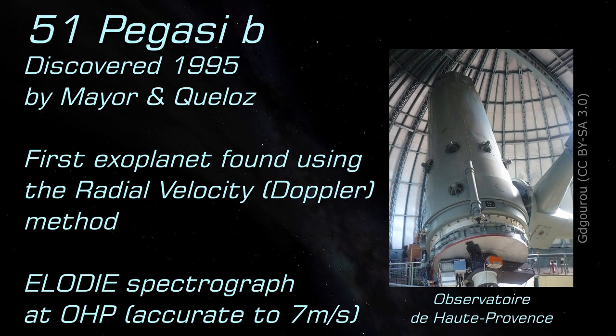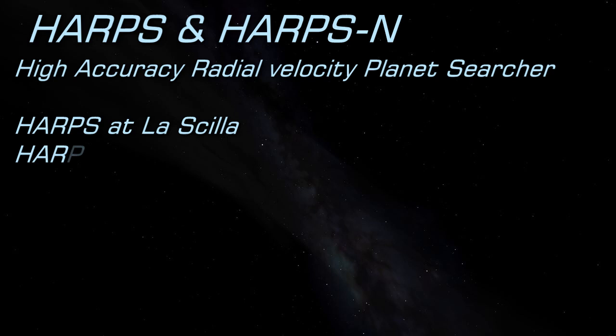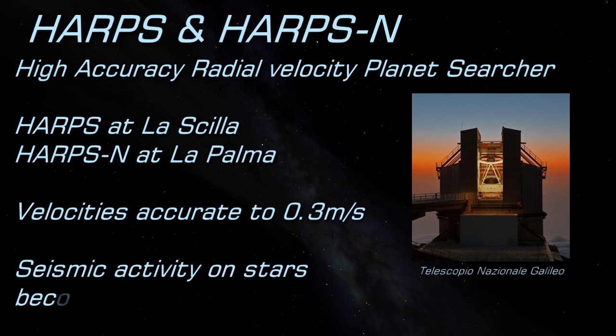If you think that's accurate, the appropriately named High Accuracy Radial Velocity Planet Searcher Spectrographs, installed at La Silla Observatory in Chile in 2002 and at TNG in La Palma in 2012, can measure velocities with a precision of just 0.3 meters per second. That's just 0.671 miles per hour. It's accurate enough that seismic activity on the star can be a limiting factor, rather than the accuracy of the instrument.